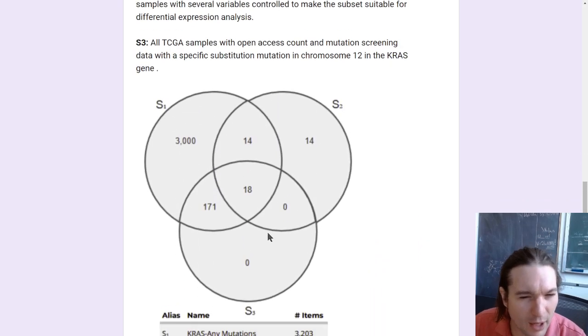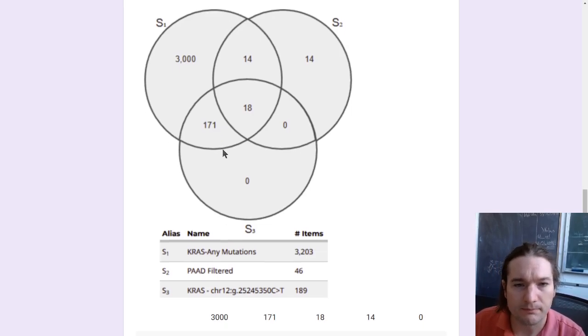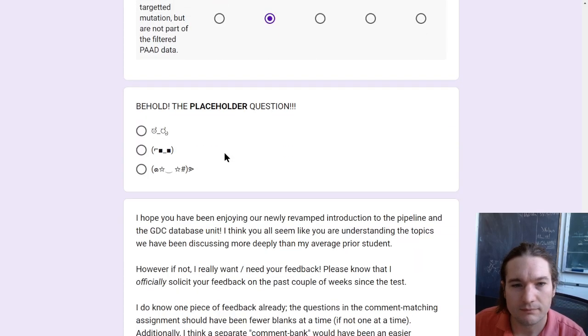And just to clarify, that was probably the most common distractor, I guess. So 171 have the mutation we're interested in, which means they also have any mutation, but the 171 differ from these 18 in that they don't belong to the subset of samples that have the clinical data we're interested in. So they could be from other projects. They could be from samples that got filtered out, like female samples or samples from pathology stages, not at 2a or whatever I picked, things like that. And that's the end.